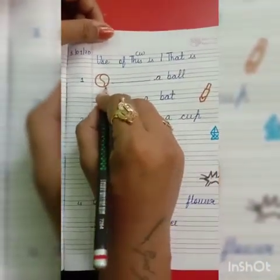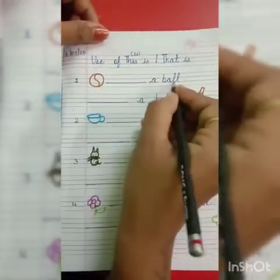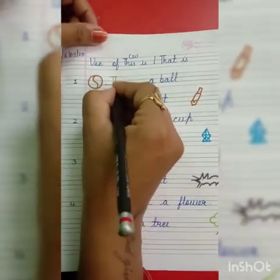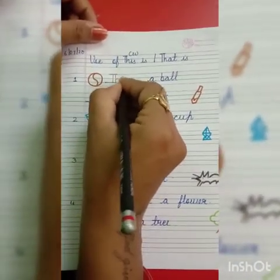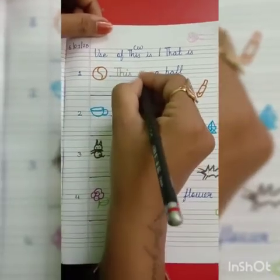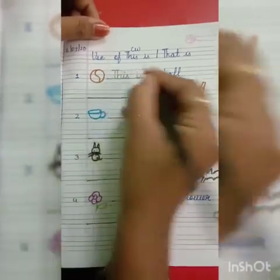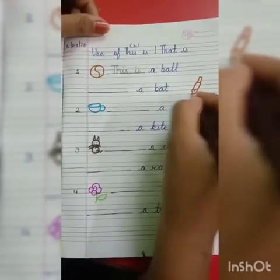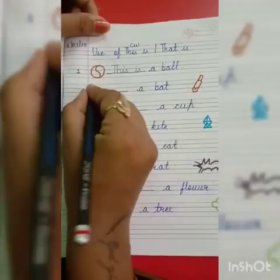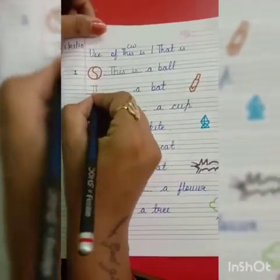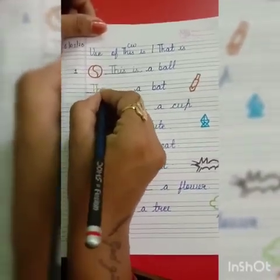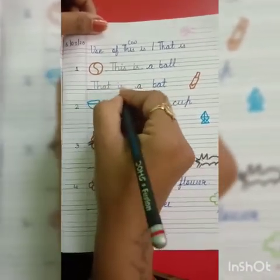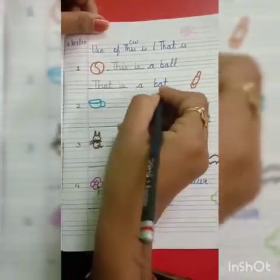Here ball is near — dash a ball. So here we will write 'this.' The spelling is T-H-I-S. This is a ball. And the bat is far. For far we will write 'that' — T-H-A-T. That is a bat.